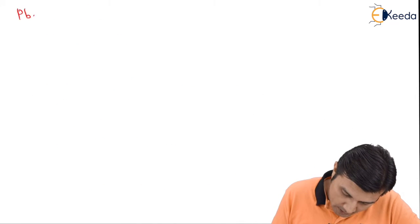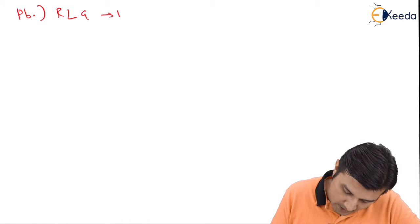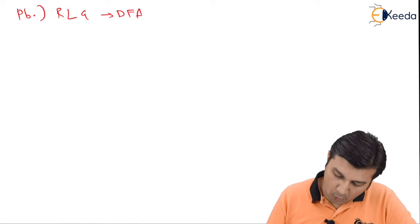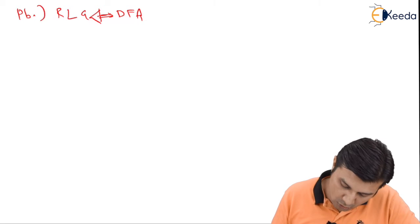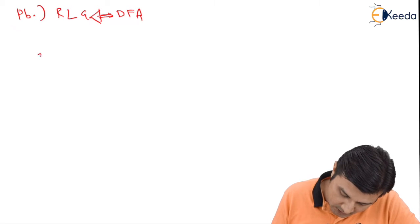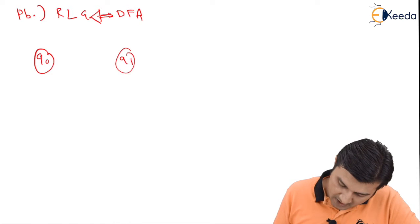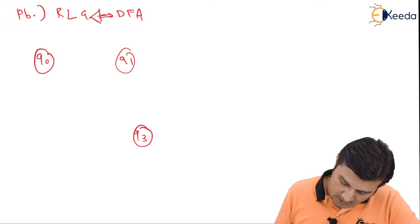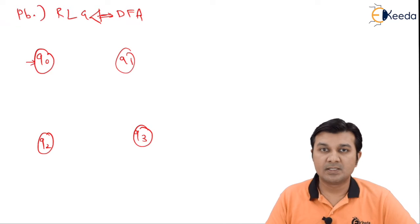The problem is to convert DFA to the right linear grammar. The question given consists of the states q0, q1, q3, and q2. Q0 is given as the start state.